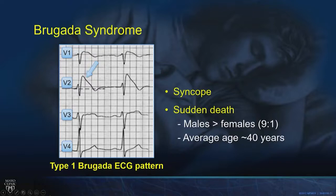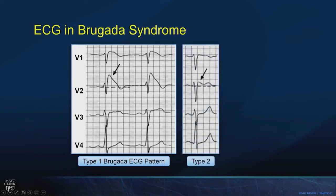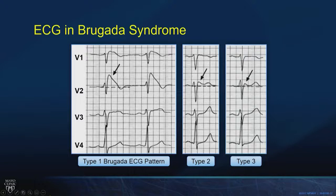Brugada syndrome can cause sudden cardiac arrest. It strikes men much more than women, even though when it's genetic, it is autosomal dominant like most genetic heart diseases. It has greater male than female expressivity, with an average age of striking around 40. The type 1 Brugada ECG pattern is distinct from the type 2 saddleback and type 3 wimpy saddleback patterns, which are non-diagnostic and non-specific — we don't care about them unless they convert to a type 1 pattern.